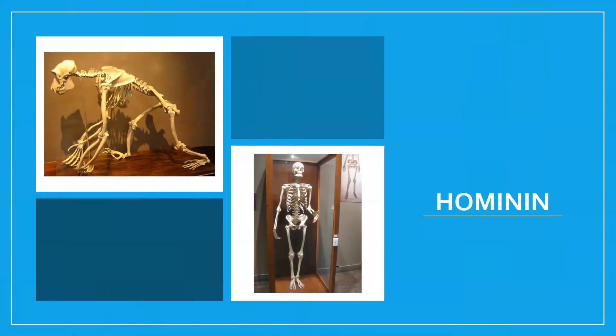Looking at the two skeletons, we're now down to the tribe level. The chimpanzee is the closest relative to the human, and you can really see the difference in their skeletal structure — the length of the arms, the orientation of the shin, and the jaw structure. There are quite significant differences even though they are so similar.